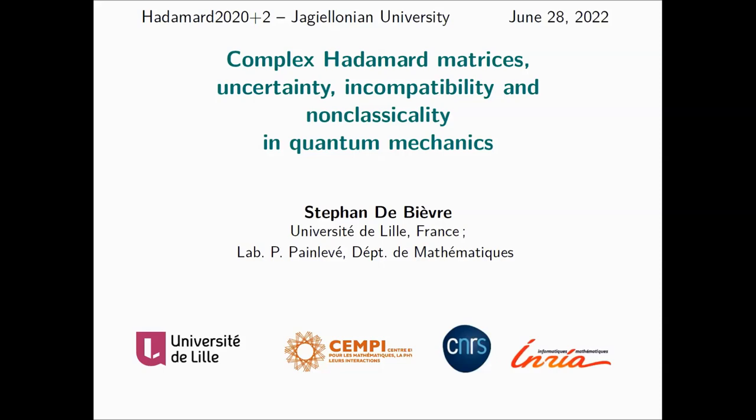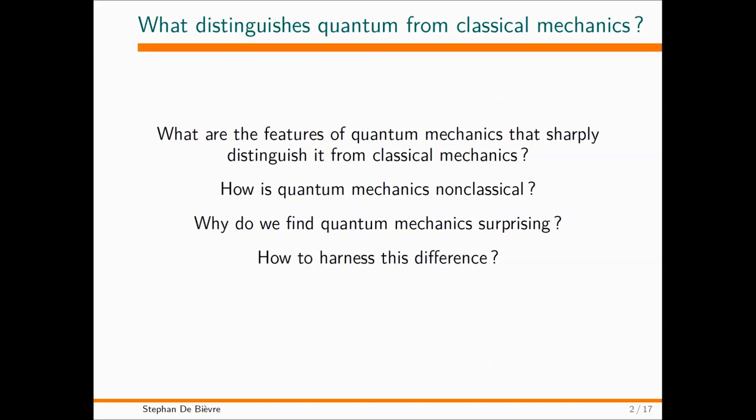I mix the word complex Hadamard matrix with some words from physics: uncertainty, incompatibility, and non-classicality, and I will try to make the links clear. Let me just start with a little bit of introduction.